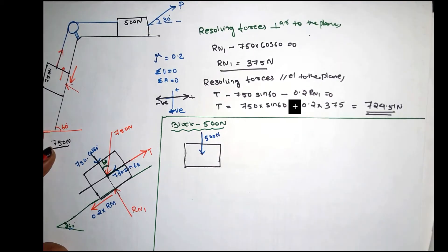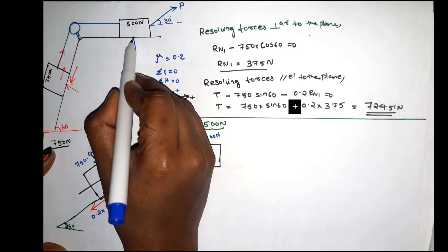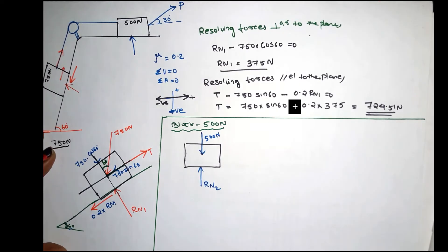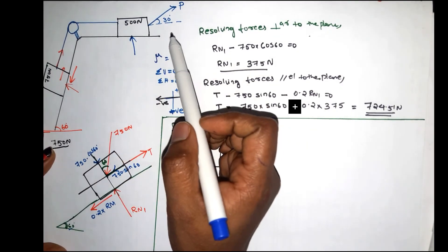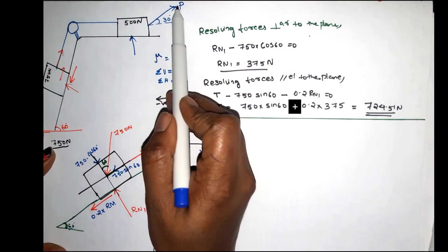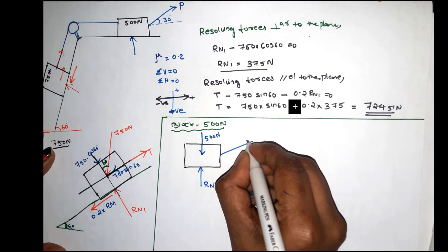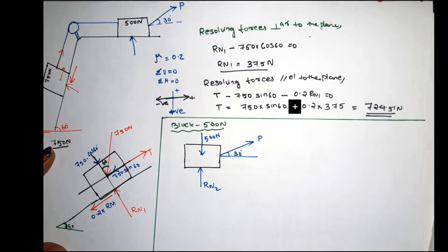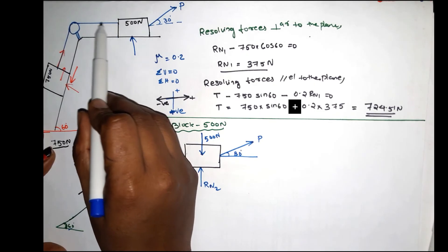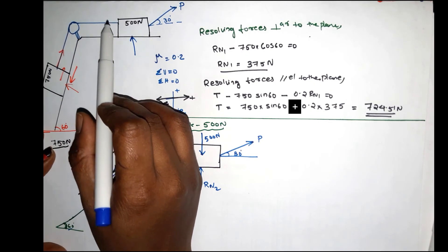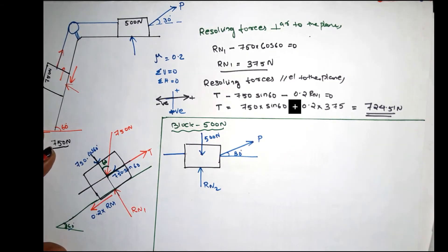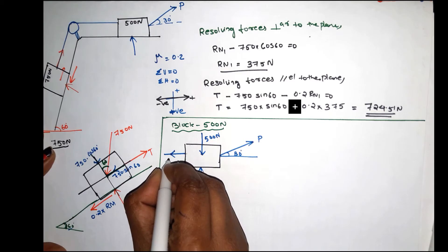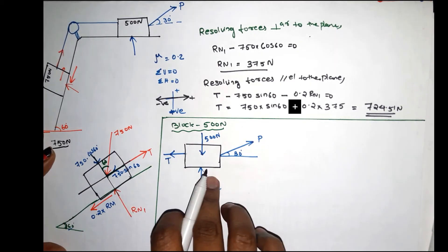Now we draw the free body diagram for the 500N block on the horizontal surface. The reaction perpendicular to the surface is RN2. The external force P is applied horizontally, and the string creates tensile force T acting on the block.